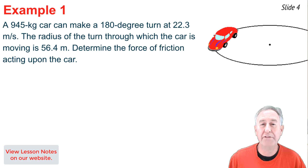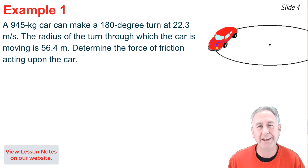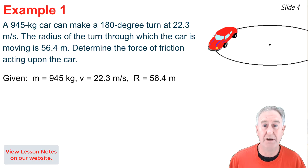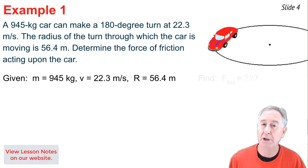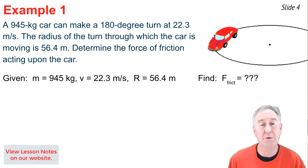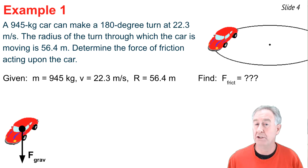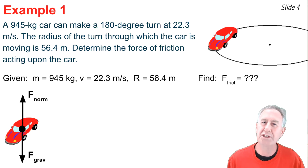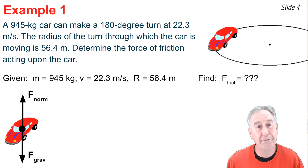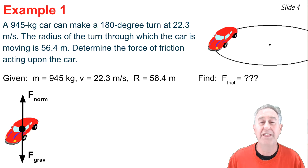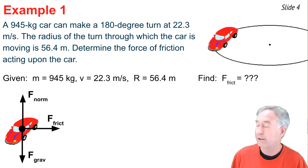In our first example, a 945 kg car is making a turn with a speed of 22.3 m/s. The radius of the turn is 56.4 meters, and we want to find the friction force acting on the car. I begin by writing down what I know — mass, speed, and radius — and what I'm looking for: the force of friction. The free body diagram shows gravity down, normal force up, and friction acting inward toward the center of the circle. On an icy day you could turn your wheels but the car would go straight because there'd be no friction — so friction is the inward centripetal force that helps the car move in a circle.